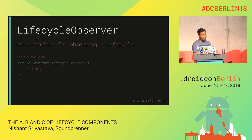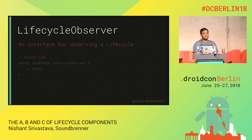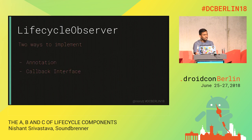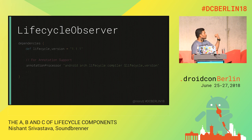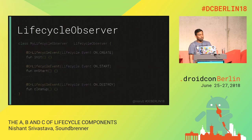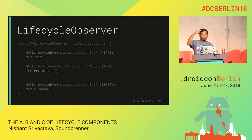LifecycleObservers are basically an interface for observing the lifecycle. It's an empty interface — the reason it's empty is that it's basically marking any class as a lifecycle observer. It works alongside that marking with two different ways to tell when a certain event is happening: one is through annotations, and the other is through a callback interface. If you want to do it with annotations, you have to include the annotation processor and compiler so it can generate the annotations for you.